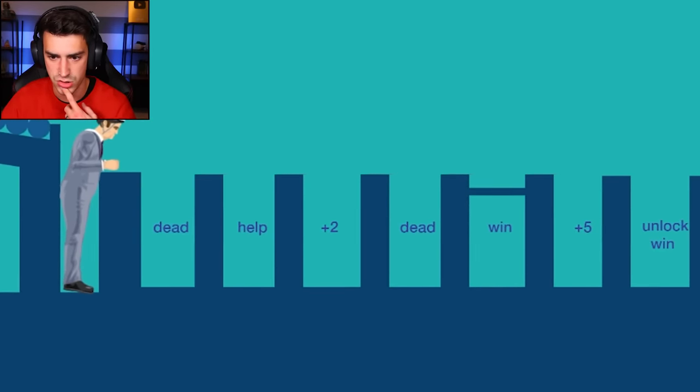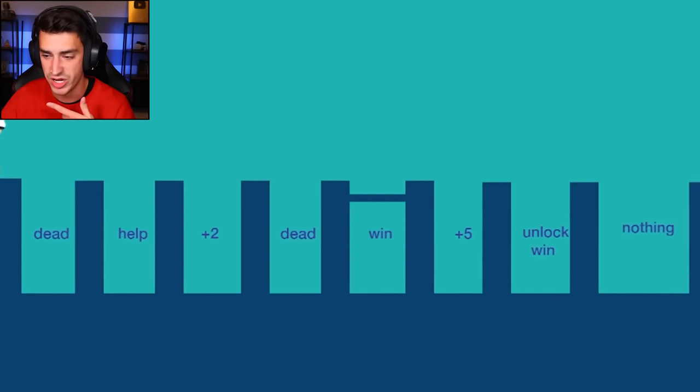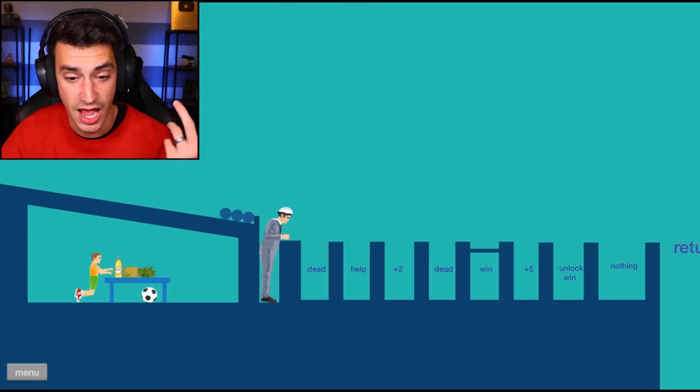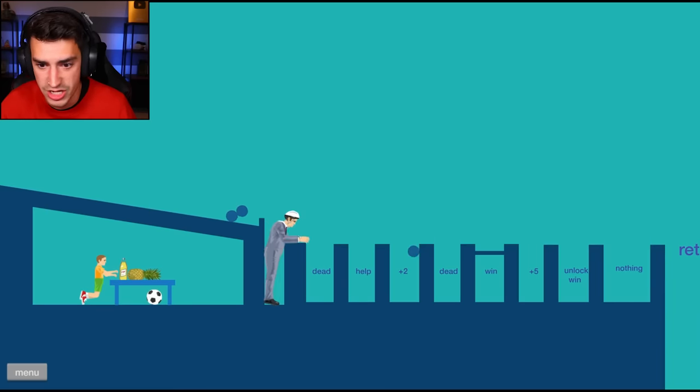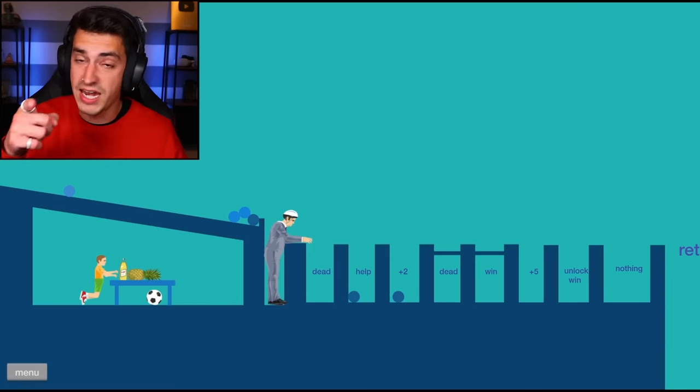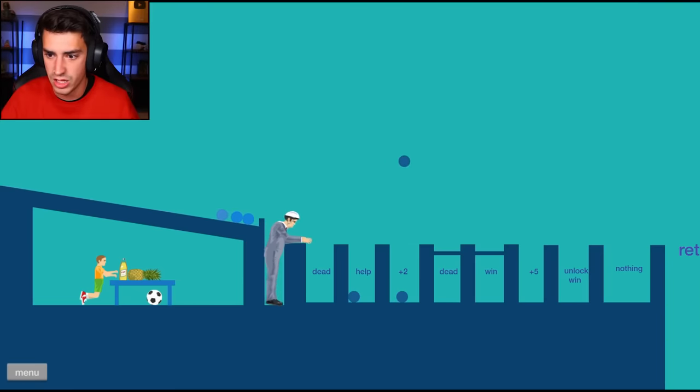Okay. Okay, so dead, help, plus two, dead, win, plus five, unlock, win, nothing. This is going to be great. I have three balls. Three balls. Are you kidding me? Plus two. Oh, okay. I see. Help. That is very helpful, actually. Okay, we got to get unlock win. Nothing. Nothing at all. Dude, it's so close. Come on. Dude, I'm so close.